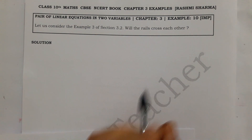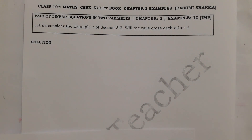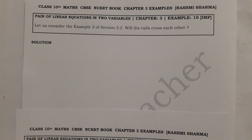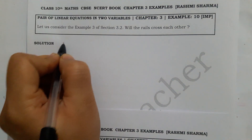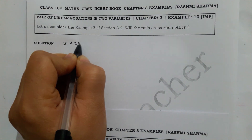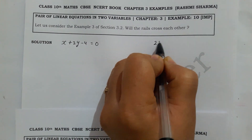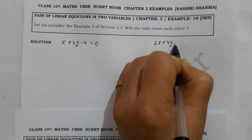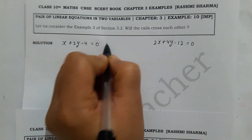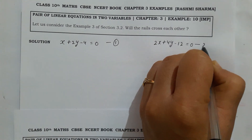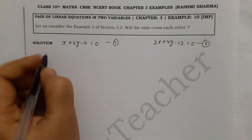If the lines intersect or coincide, then the rails will cross — that means there will be a solution. Otherwise there will be no solution and the rails will not cross. So let's write our equations: x + 2y − 4 = 0 (Equation 1) and 2x + 4y − 12 = 0 (Equation 2). We will solve these two equations by substitution method.